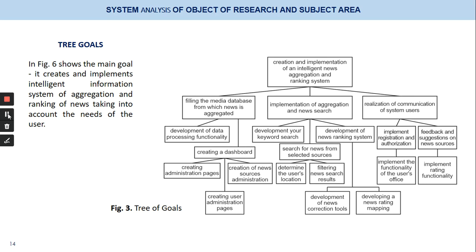Figure three shows the main goal tree. It presents the goal of creating and implementing an intelligent information system for aggregation and ranking of news taking into account the needs of the user. You can see on the slide the figure of the tree of goals.